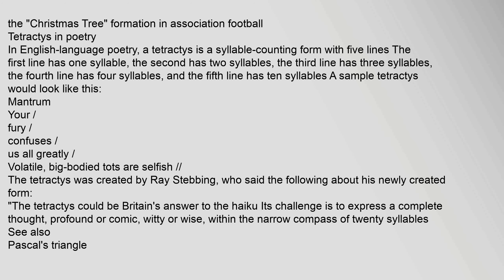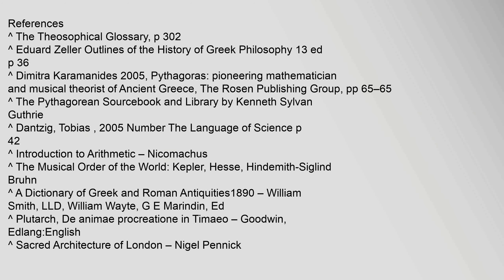In English language poetry, a tetractys is a syllable-counting form with five lines. The first line has one syllable, the second has two syllables, the third line has three syllables, the fourth line has four syllables, and the fifth line has ten syllables. The tetractys was created by Ray Stebbing, who said: 'The tetractys could be Britain's answer to the haiku. Its challenge is to express a complete thought — profound or comic, witty or wise — within the narrow compass of twenty syllables.'